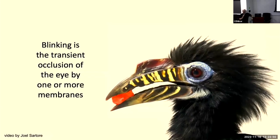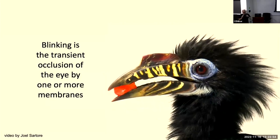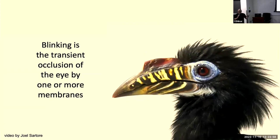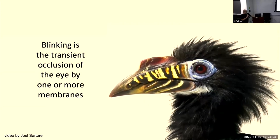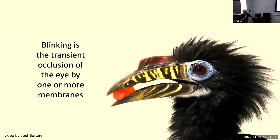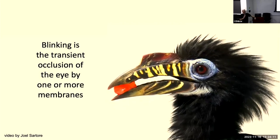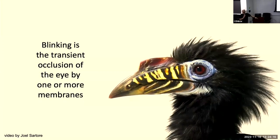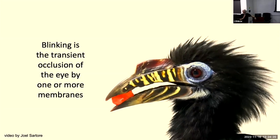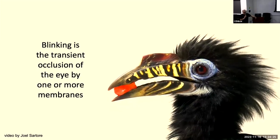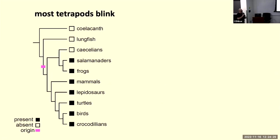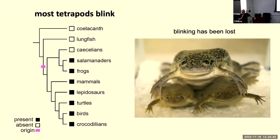Besides variation in the membranes themselves, the glands around the eye can be quite variable. We have Meibomian glands, lacrimal glands, and Harderian glands — and not all animals that blink have these features. Based on the current distribution, we think blinking evolved once at the base of crown tetrapods and has been lost a few times in living vertebrates. Several fully aquatic amphibians have lost this behavior — the African clawed frog Xenopus, for example, forever stares back at you with no eyelids.